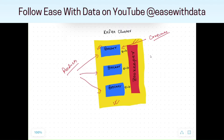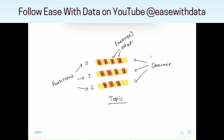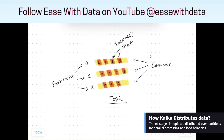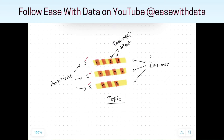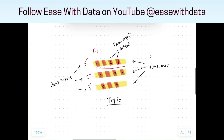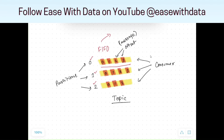Now that we understand how a Kafka cluster works, let's go ahead and see how Kafka attains its distributed nature. In Kafka, a topic is distributed in the form of partitions. Consider we have a topic and we distributed this topic into three partitions — 0, 1, and 2. As and when we put messages, those messages get into the topic in FIFO format — what we call first in, first out. This FIFO ensures the messages are in sequence as they are posted.